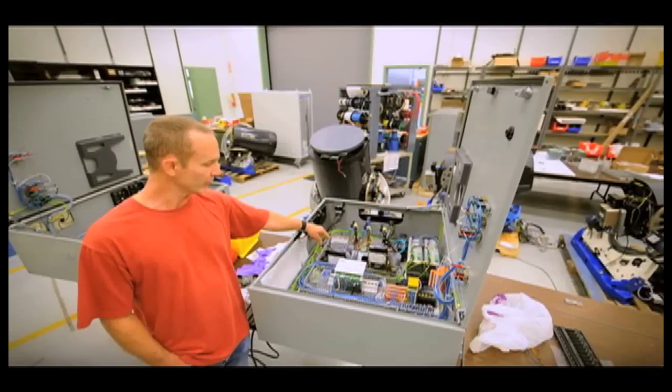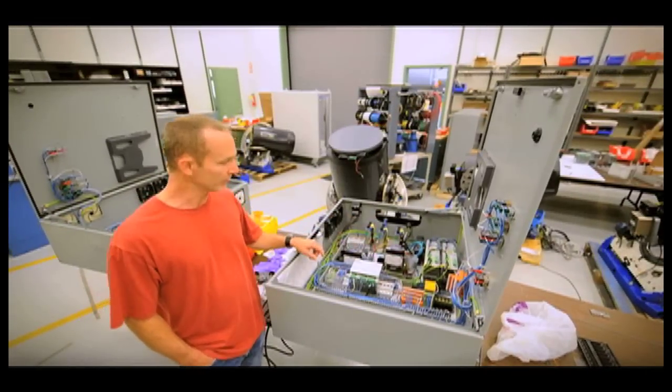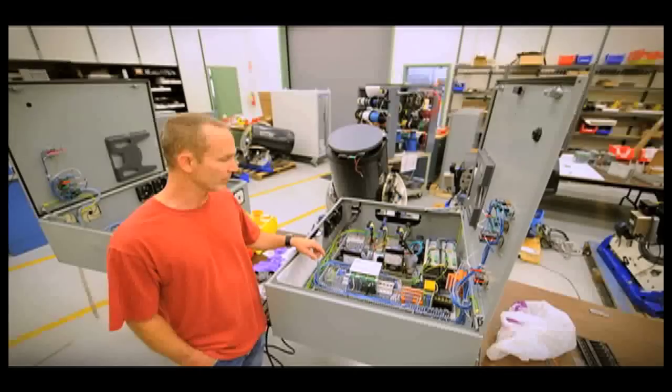We have two computers. One will process images and get them back to network. The other computer is responsible for all motion control on the telescope, and then the servo drives are what actually drives the motors on the telescope and controls positioning.